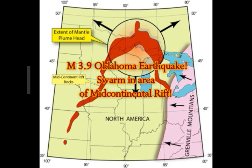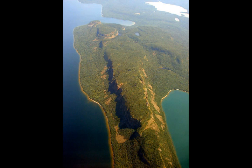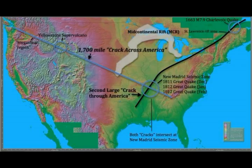A rift takes place, as we know, for example, in the Great Rift Valley in East Africa. This is the rift valley of the Mid-Continental Rift. You can see that Omega-looking shape over the Great Lakes — that's the Mid-Continental Rift and that's the magma under there, that mantle plume. The black line is the New Madrid Seismic Zone, which is another rift valley.